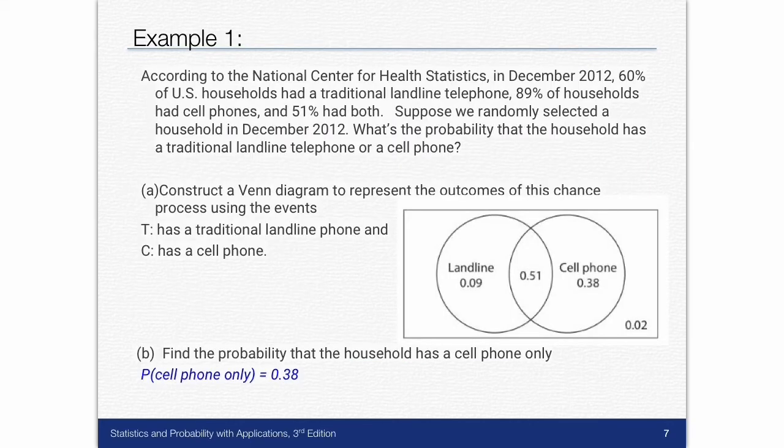So here's a type of problem you'll see. According to the National Center of Health Statistics in December 2012, 60 percent of U.S. households had a traditional landline telephone, 89 percent of households had cell phones and 51 percent had both. Suppose we randomly selected a household in December 2012. What's the probability that the household has a traditional landline telephone or a cell phone?